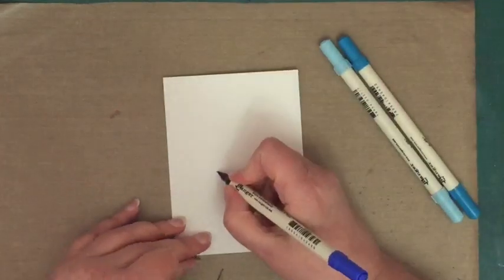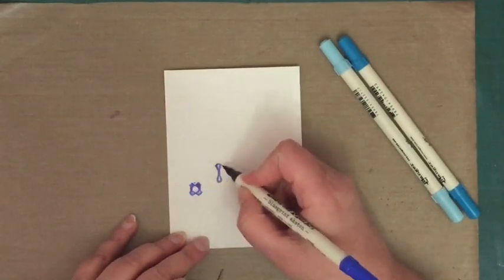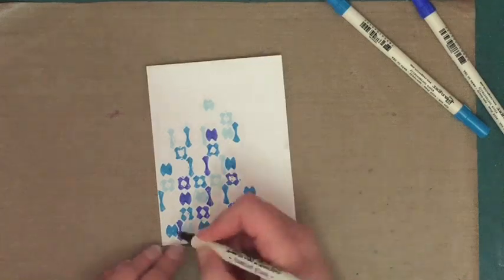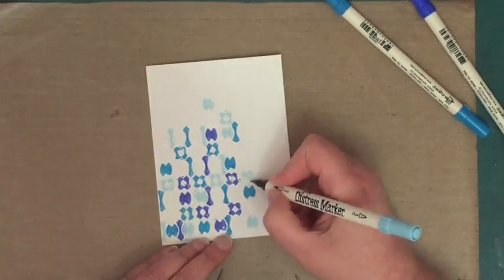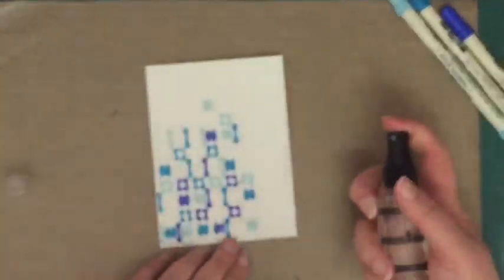Now I'm going to start coloring in. At the beginning of this it's going to look like an absolute dog's breakfast. I'm not taking any care to color these in neatly, I'm just getting some color in. It looks an absolute mess but the magic is going to happen when I add the water.